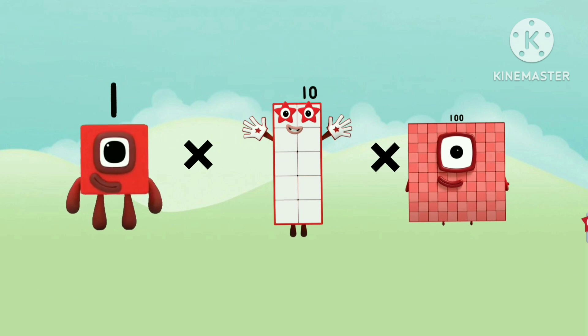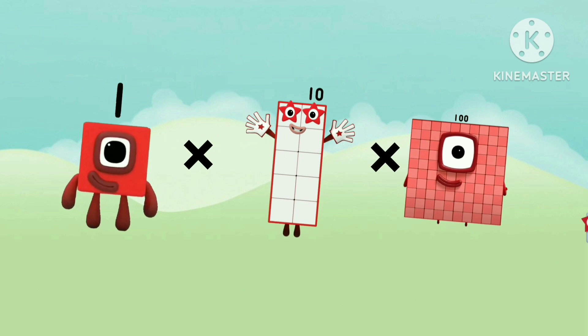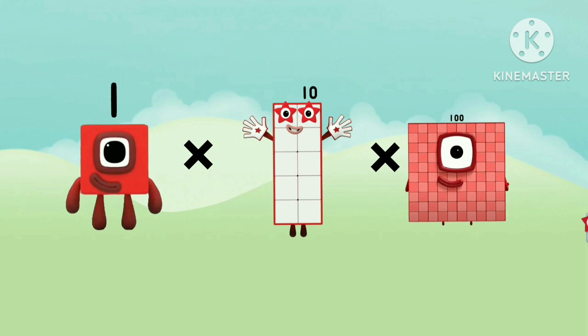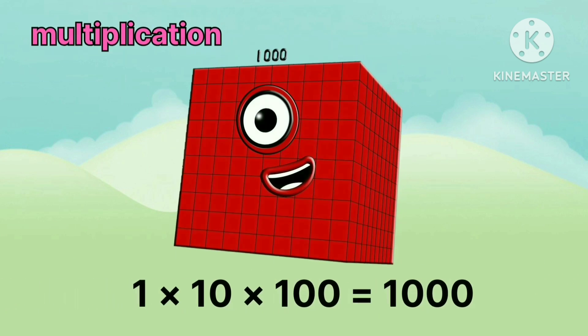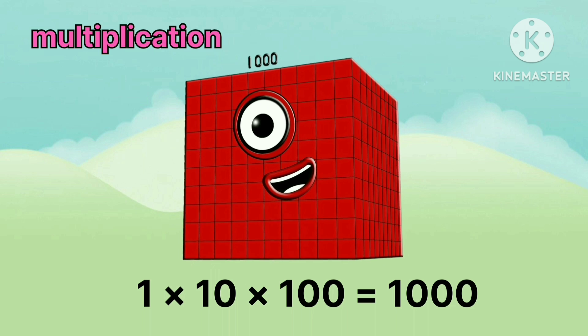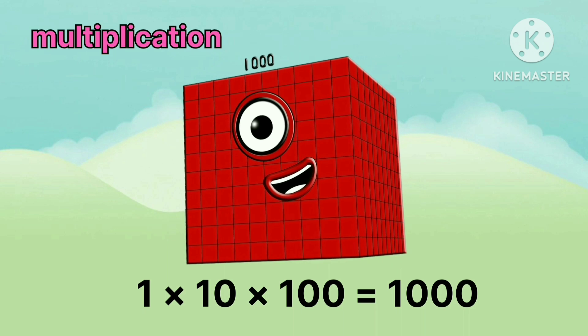1. Multiply by 10. Multiply by 100. Equals 1000.